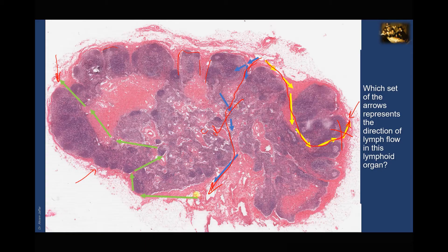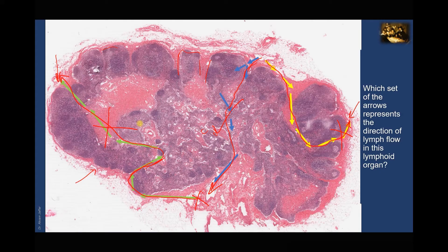Looking at the green arrows, these are directed to the subcapsular plexus from the efferent lymphatic vessel, not from the afferent lymphatic vessel, and they go in the opposite direction — to the medullary sinus and then as if leaving through the afferent lymphatic vessel. So the green arrows represent the incorrect route taken by the lymph as it passes through the lymph nodes.